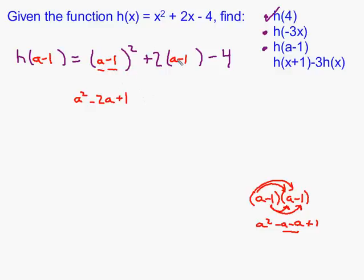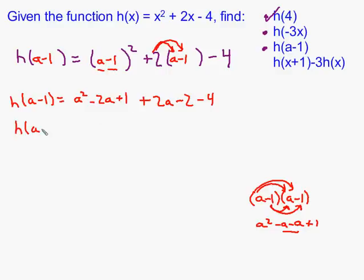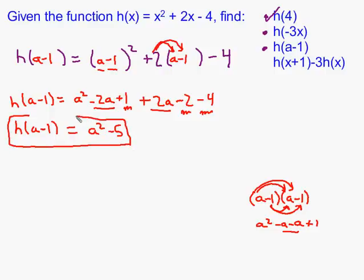Now I proceed to simplify. Distributing the 2 gives 2 times a and 2 times negative 1, which is negative 2, and then subtract 4. Combining like terms: a squared is the only squared term. Then minus 2a and plus 2a cancel to give 0. Constants: 1 minus 2 is negative 1, minus 4 gives negative 5. So h of a minus 1 simplifies to a squared minus 5.